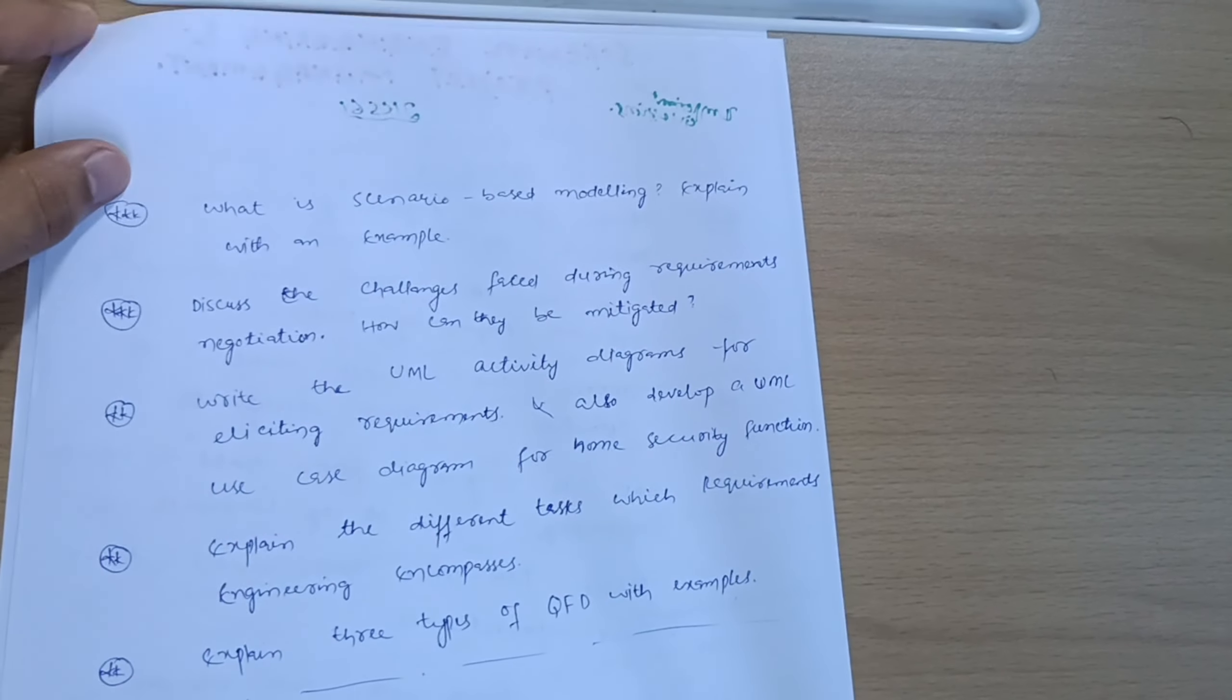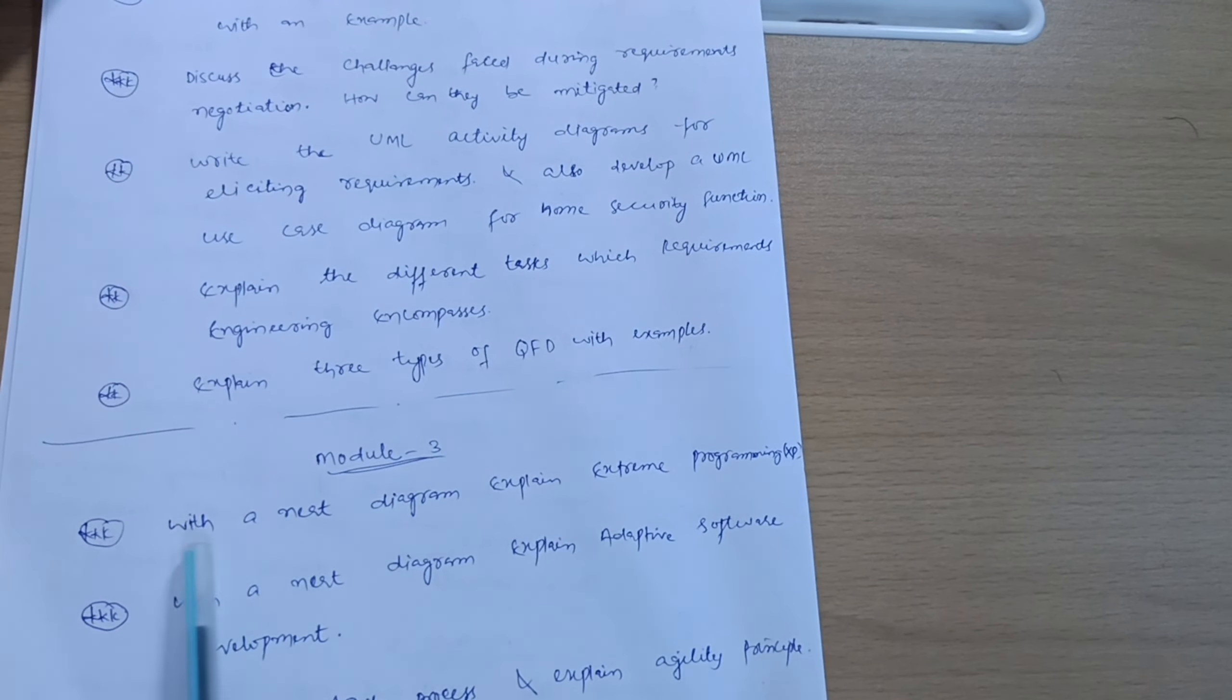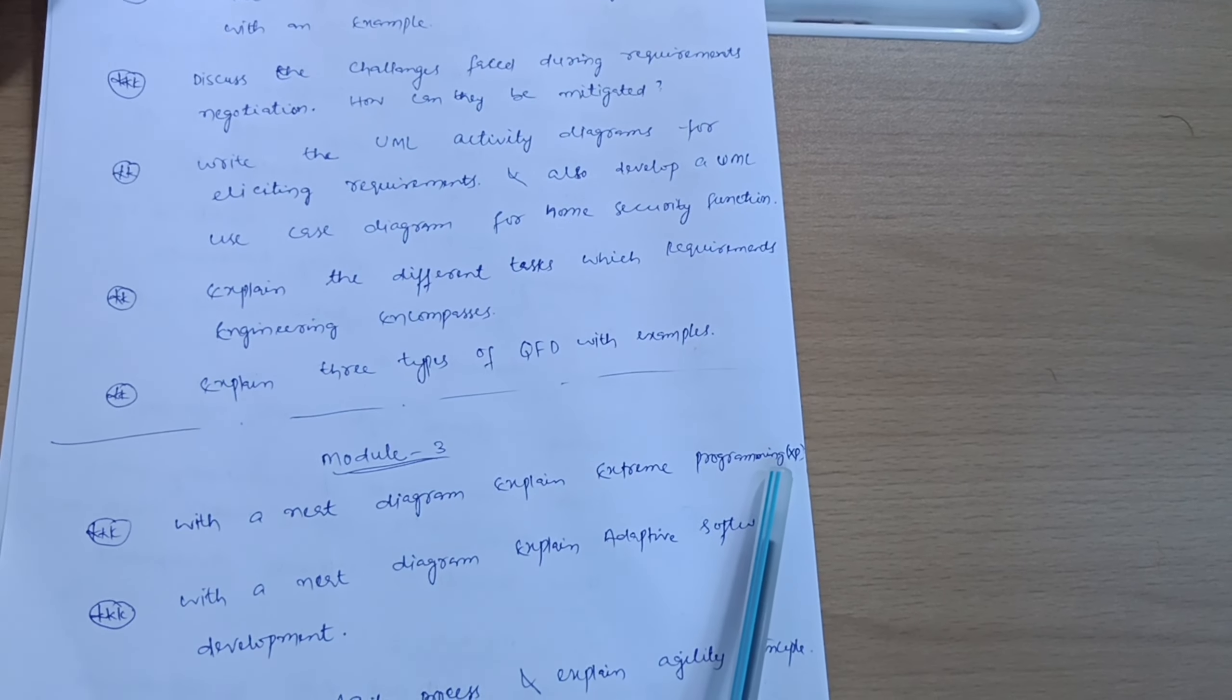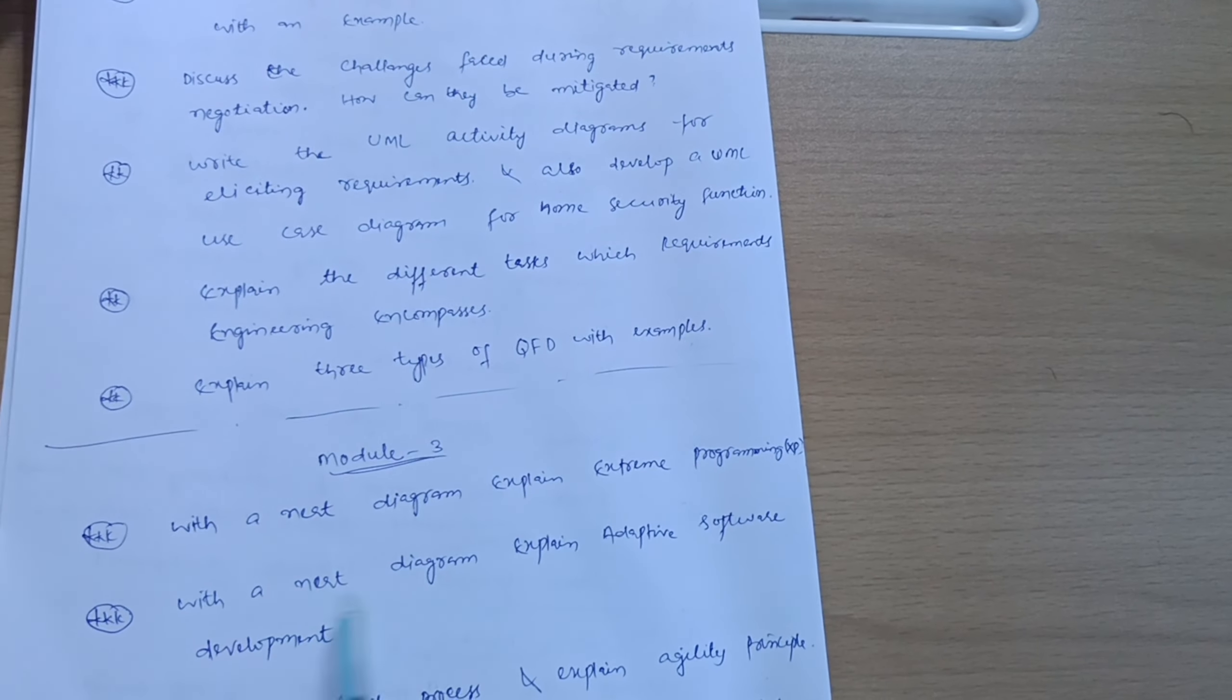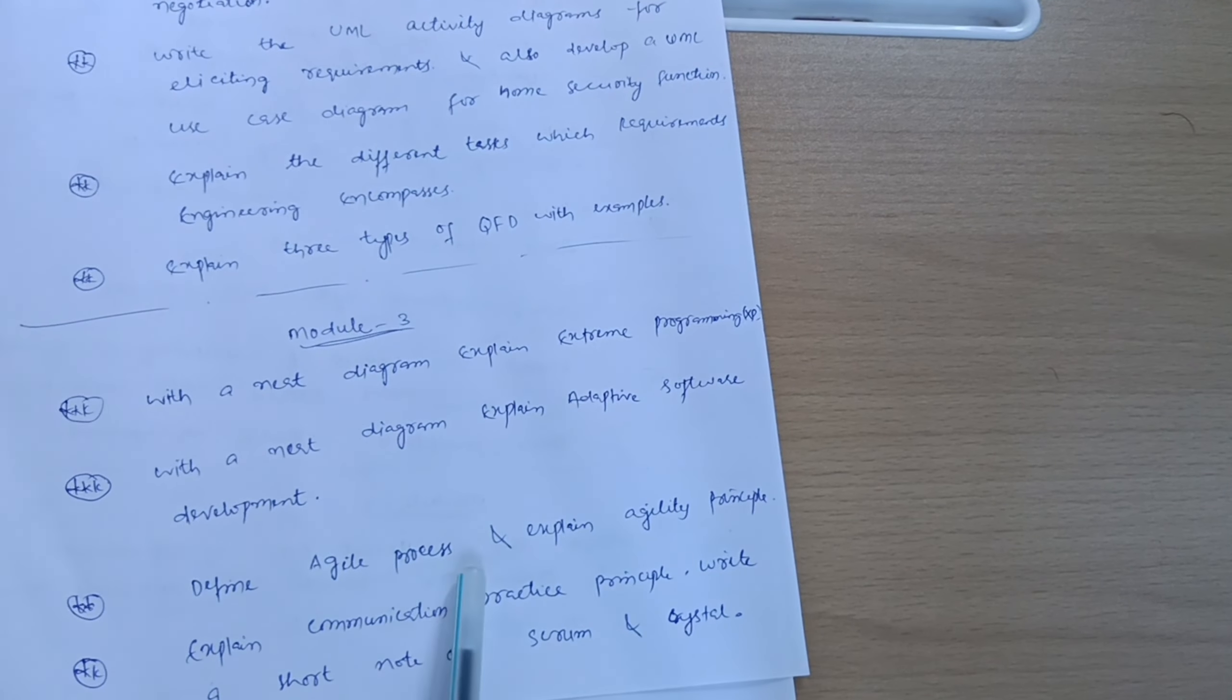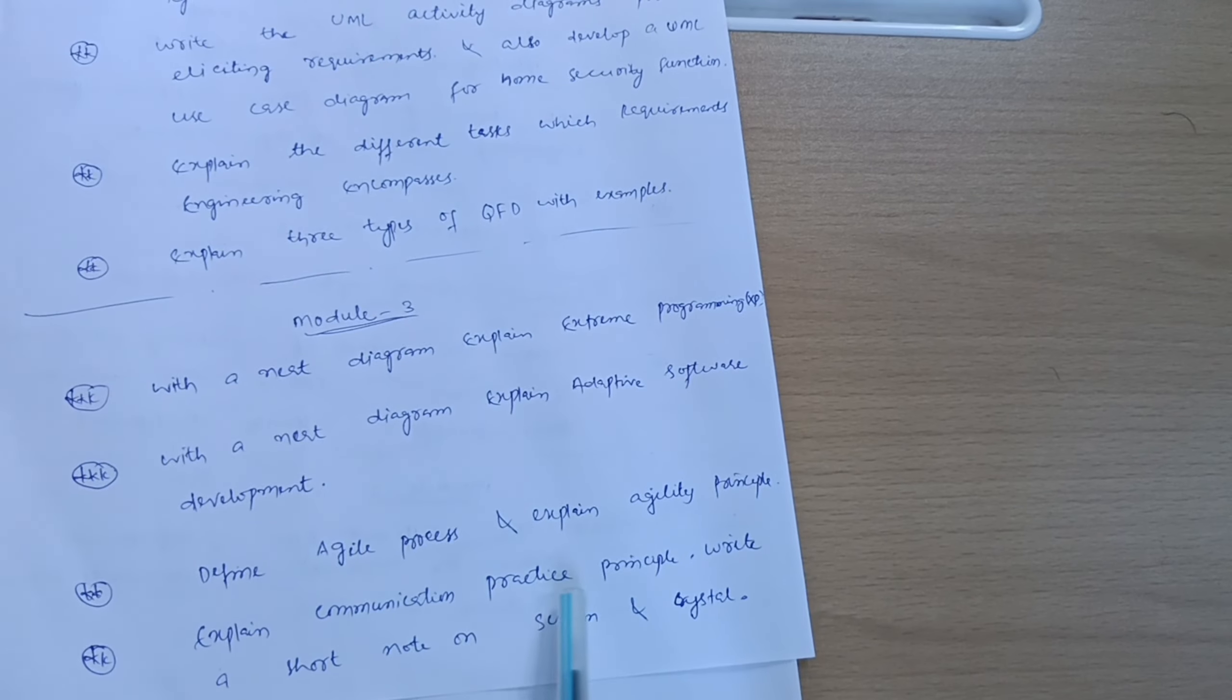Now Module 3. With a neat diagram, explain Extreme Programming (XP) - it is a super important question. With a neat diagram, explain adaptive software development. Define agile process and explain agility principles. Explain communication practice principles. Write a short note on Scrum and Crystal.